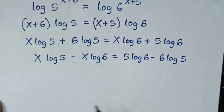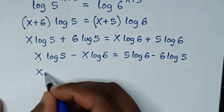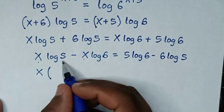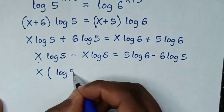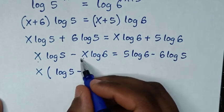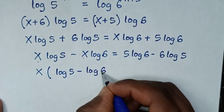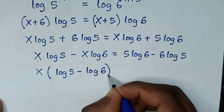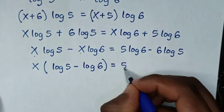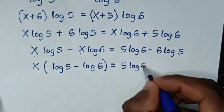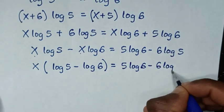Then in the next step, x is common, so we'll take x out of the bracket: x log of 5 minus x log of 6 divided by x is log of 6, bracket, then is equal to 5 log of 6 minus 6 log of 5.